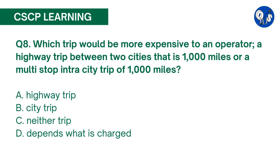Question number 8. Which trip would be more expensive to an operator? A highway trip between two cities that is 1000 miles, or a multi-stop intra-city trip of 1000 miles? A. Highway trip, B. City trip, C. Neither trip, D. Depends what is charged. The correct answer is B. The starting and stopping of the truck in the city is more expensive in fuel, labor, wear on the truck, etc.